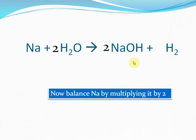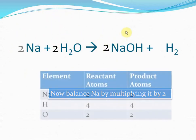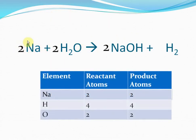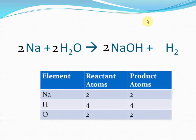Now hydrogen is balanced. However, sodium is not balanced — there are two Na on the right and only one on the left. Oxygen is still balanced: two on the left and two on the right. To balance sodium, we multiply Na on the left by two. Thus sodium is balanced: two atoms on each side. Hydrogen is balanced: four atoms on each side. And oxygen is balanced: two atoms on each side. So now this reaction is balanced: 2Na + 2H2O → 2NaOH + H2.